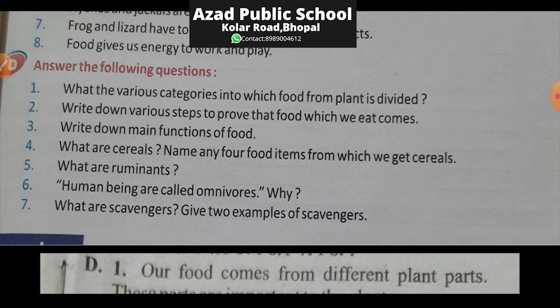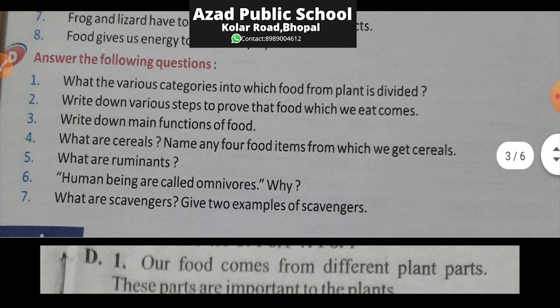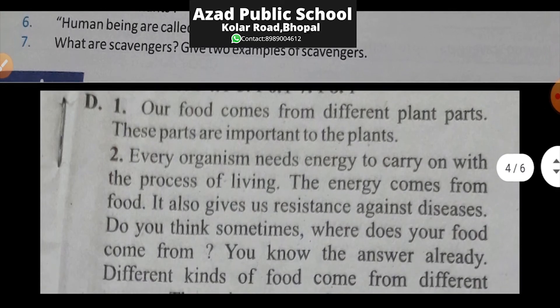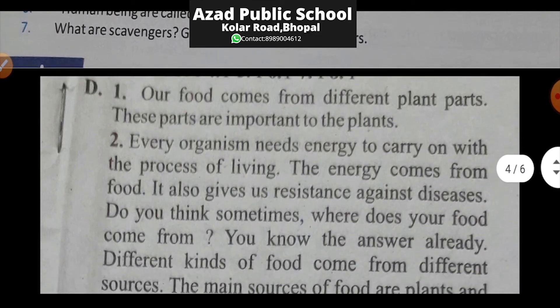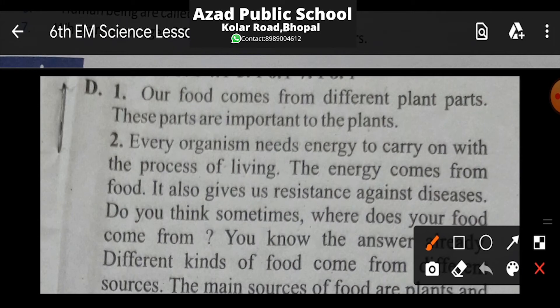Question 1: What are the various categories into which food from plants is divided? Paudhe se jo hume khane milte hain woh kin kin categories mein divide hota hai? The answer is: our food comes from different plant parts — hamara khana paudhe ke different parts se aata hai.